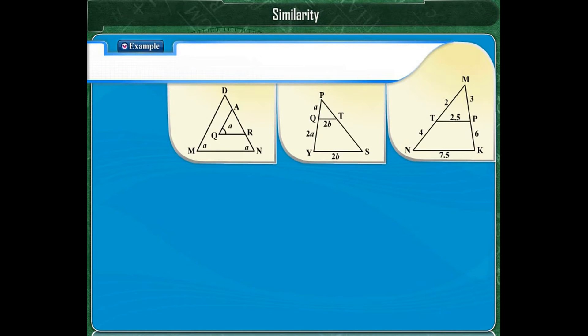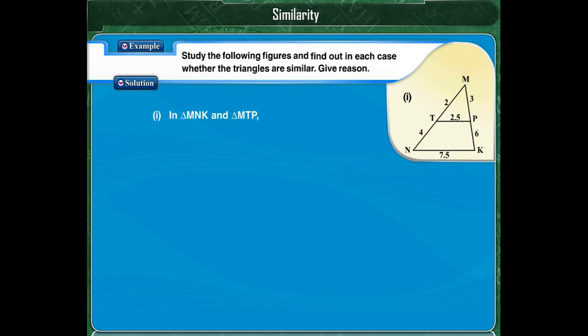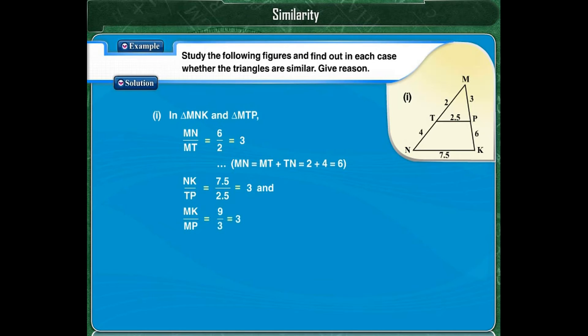Example 1. Here some triangles are shown. We have to find out whether they are similar or not with reason. Consider figure 1 with triangle MNK and triangle MTP. Since all the sides are given, let's apply the SSS test. The ratio MN upon MT is 6 upon 2, which equals 3. Similarly, the ratio NK to TP and MK to MP is also 3. All three sides of triangle MNK are in proportion with the corresponding sides of triangle MTP. Therefore, by SSS test, triangle MNK is similar to triangle MTP.